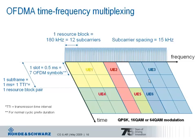There is also the notion of a slot, which is 0.5 milliseconds corresponding to seven OFDMA symbols. The slot was introduced because the downlink reference symbols, also called pilot symbols, are repeated every slot. However, for resource assignment, the transmission time interval of one millisecond — the subframe — is the important unit because this defines the scheduling interval.